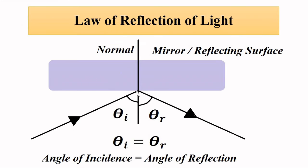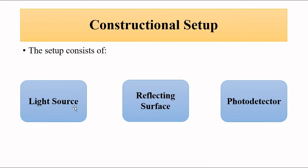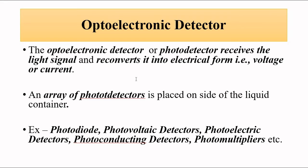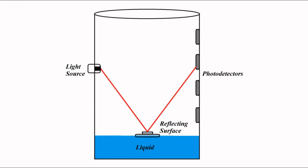The basic principle used is the law of reflection: the angle of incidence equals the angle of reflection. The setup consists of a light source, a reflecting surface placed on a floating object, and photo detectors. Light emitting diodes and lasers can be used to generate the light. Photo detectors convert the light signal into a suitable electrical signal — voltage or current. Photo diodes, photovoltaic detectors, photoelectric detectors, photo conducting detectors, and photomultiplier tubes can all be used.